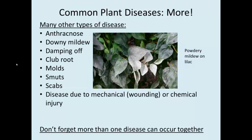Many more diseases are out there. Anthracnose we often see on sycamores in central Iowa in the spring — they get a sick-looking look to the leaves. Sometimes, if it's a wet spring, all the leaves fall off, and then a new set of leaves forms later in the summer when the anthracnose fungus is no longer being favored by the cool, wet spring. Downy mildew is another extremely common one. Powdery mildew — you can see it on lilac — often makes plants later in the summer look like they've been dusted with flour; it's actually the spores of a fungus. Club root, molds, smuts, scabs, and of course diseases due to mechanical wounding, such as routinely being hit by lawn mowers, cause disease tissue to develop.